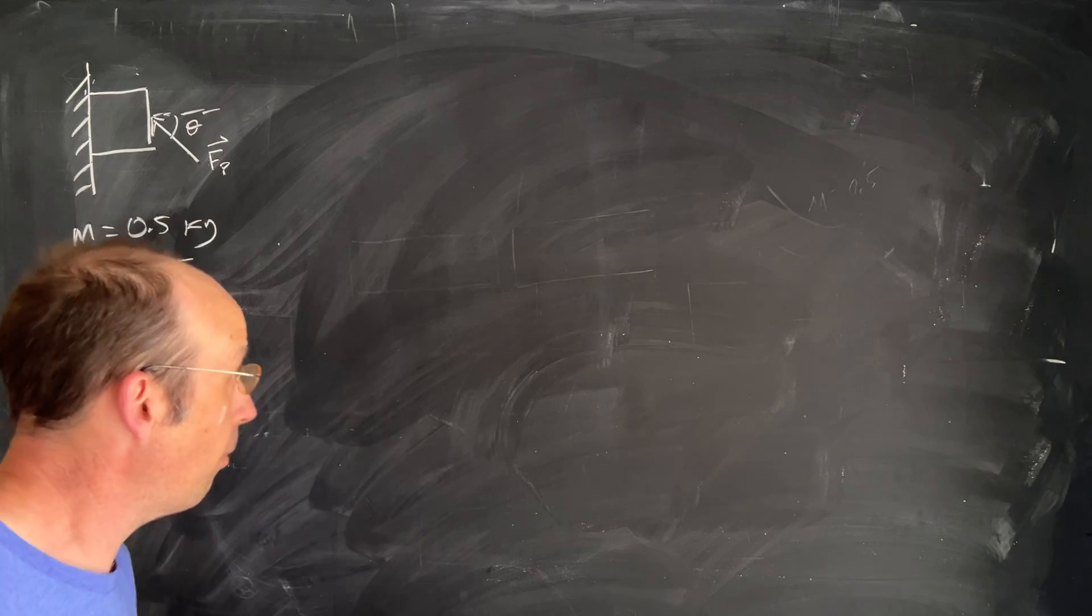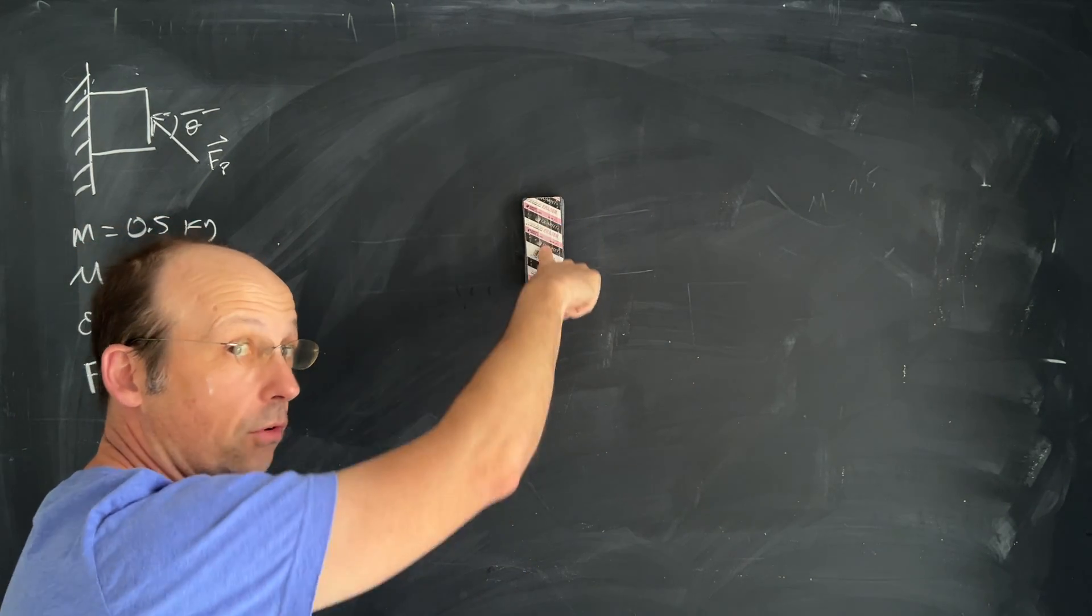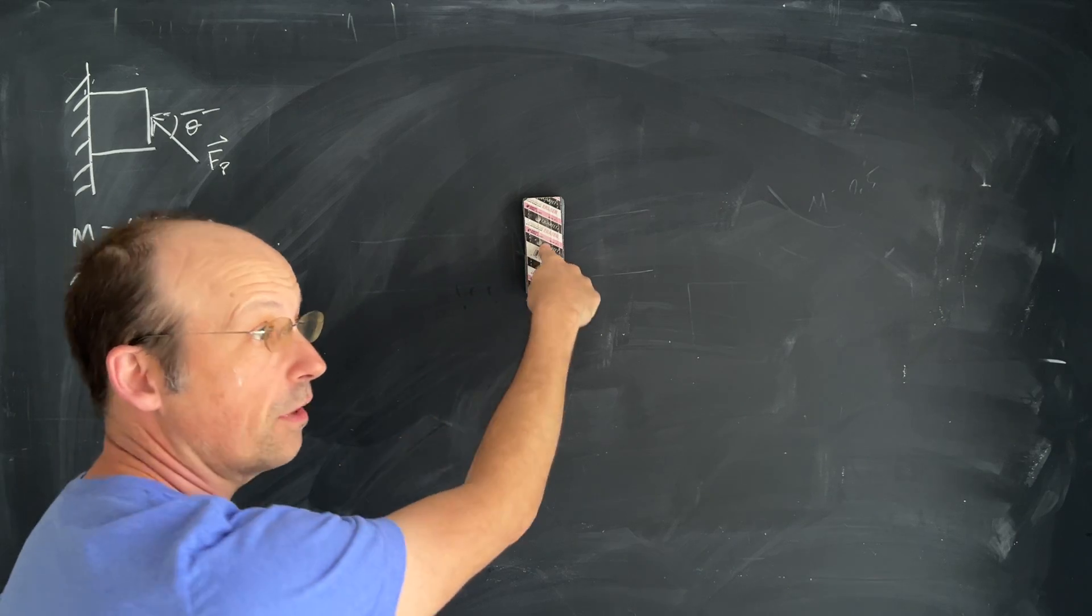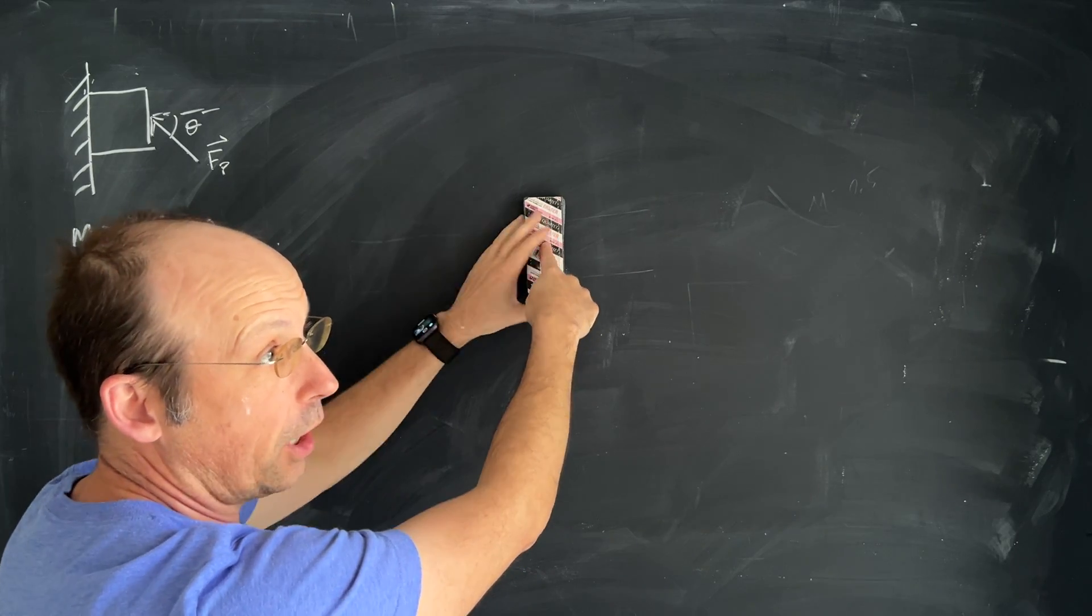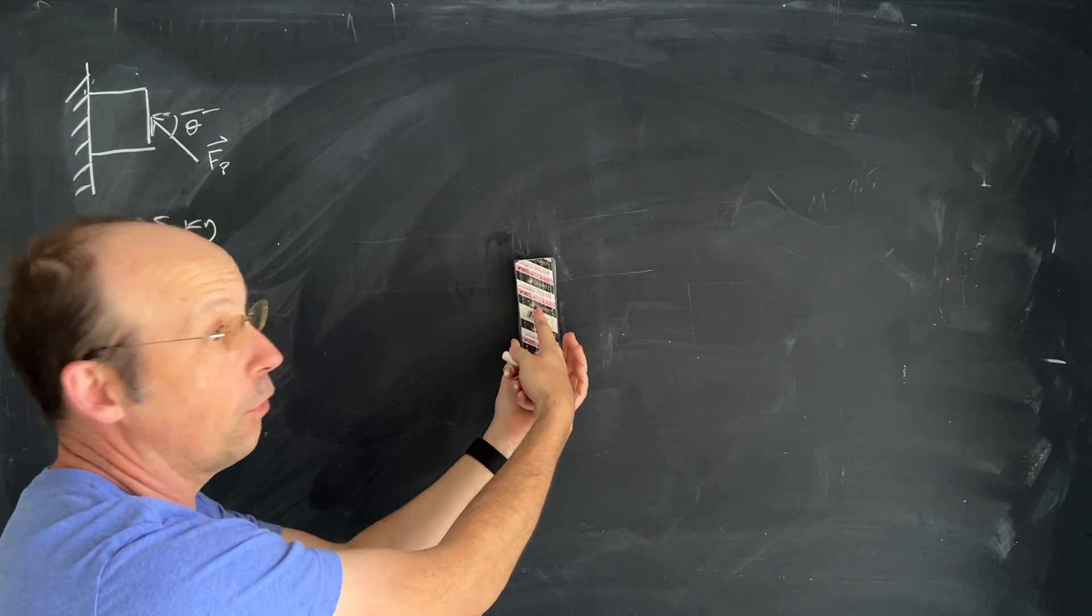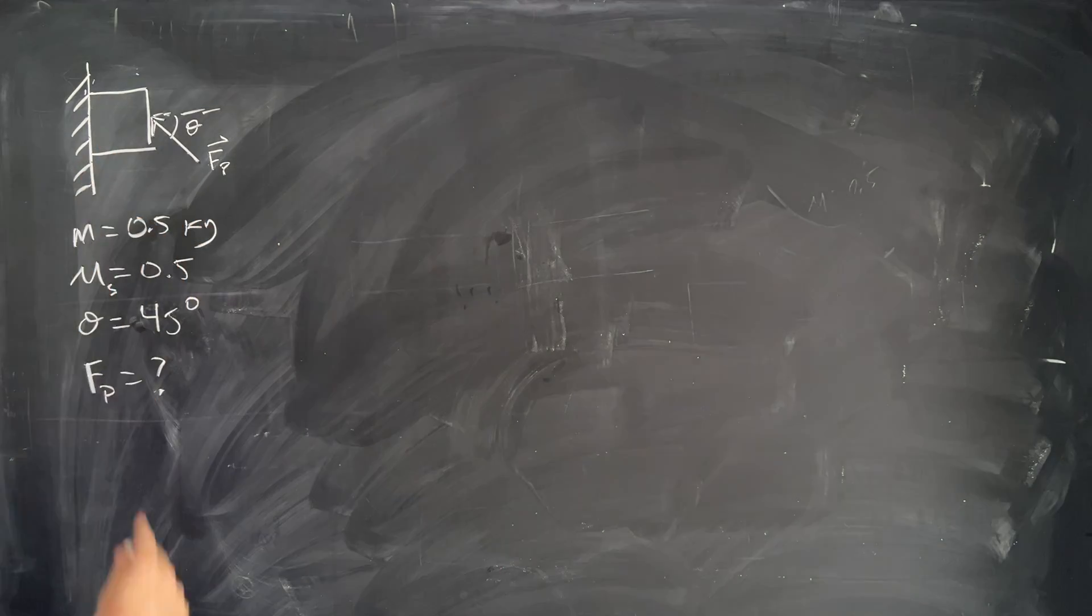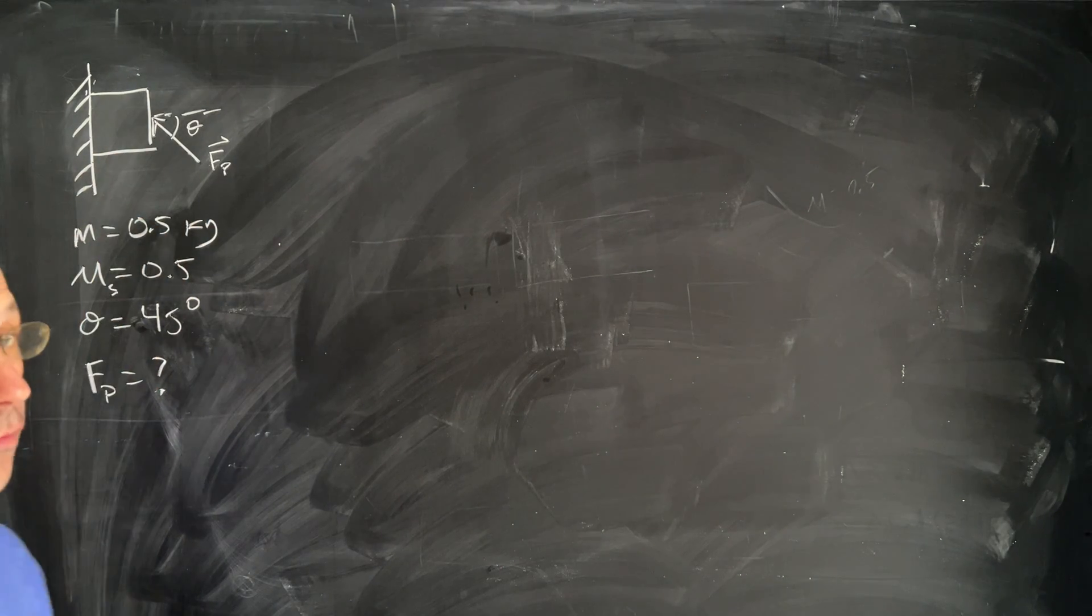So here the idea is that you have a block like this and as you push at different angles with friction you can figure out how much you have to push to hold it up. I can figure out how much I have to push to hold up like this or straight against a wall but what about at an angle of 45 degrees? What force do I have to push on this block to hold it up at an angle of 45 degrees?